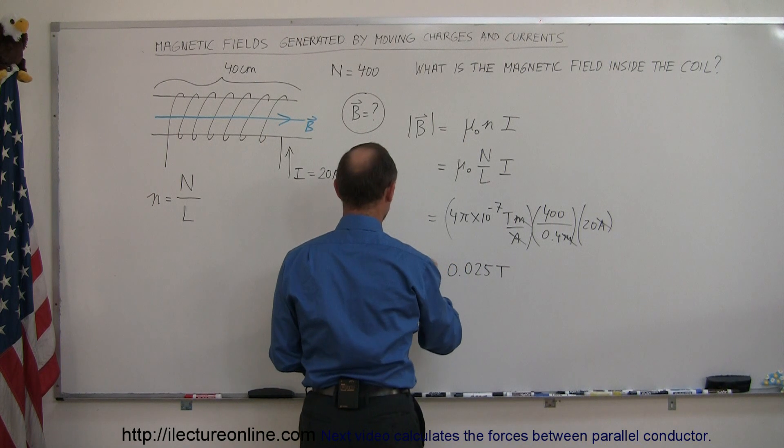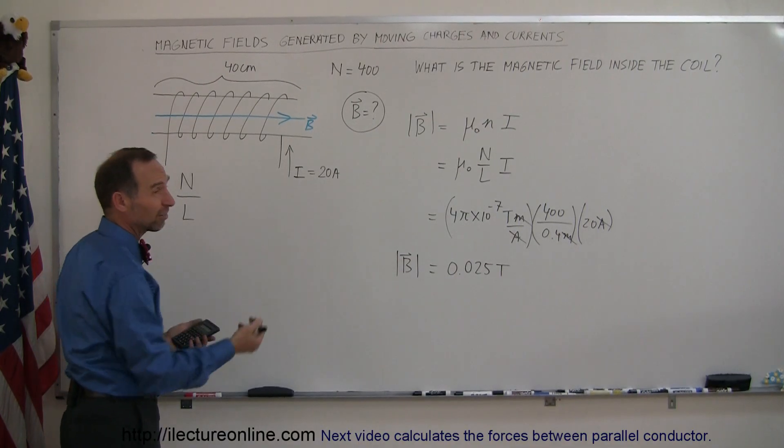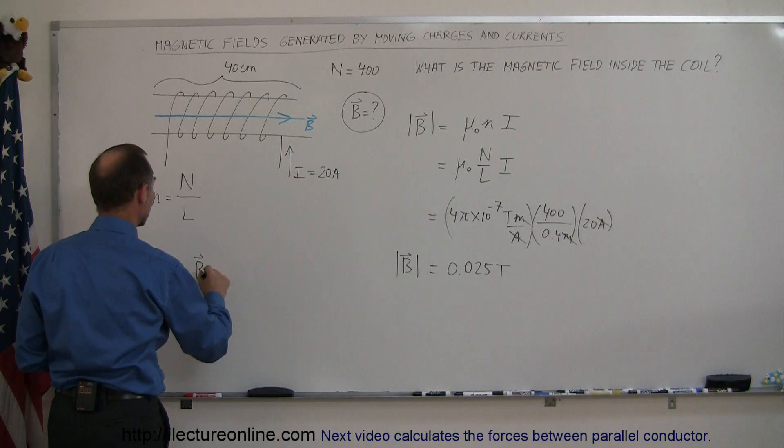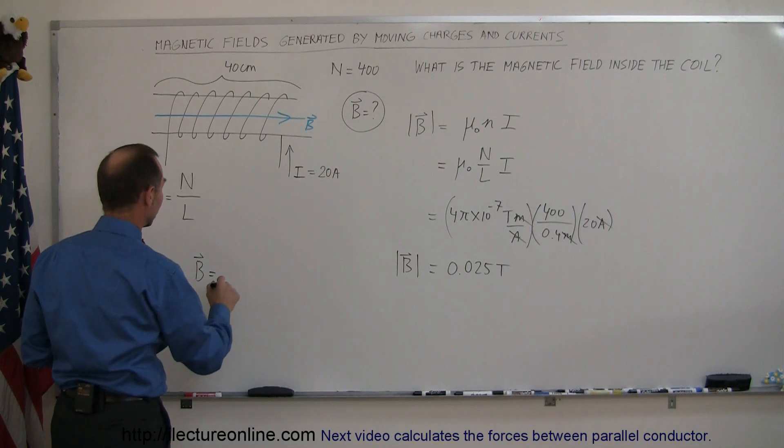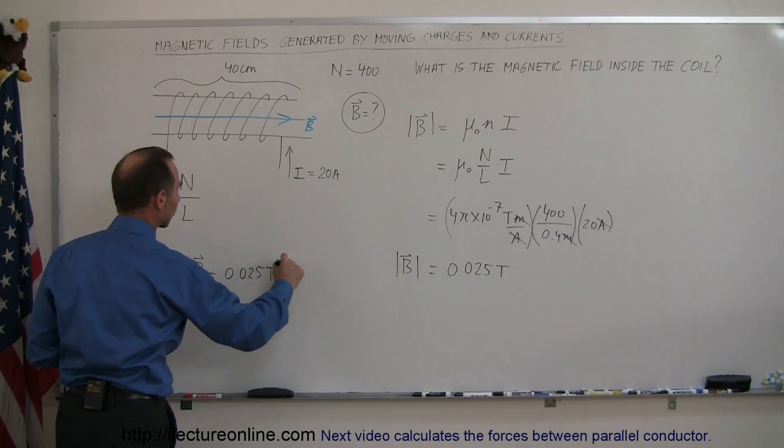And so that would be the magnitude of the B field. And of course, if you now want to write it as a vector quantity, since you know that it's to the right, that's a positive x direction. In this case, you could say that the magnetic field B inside the coil is equal to a positive 0.025 teslas in the x direction.